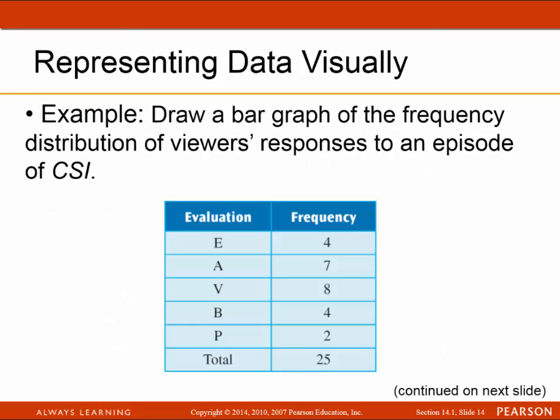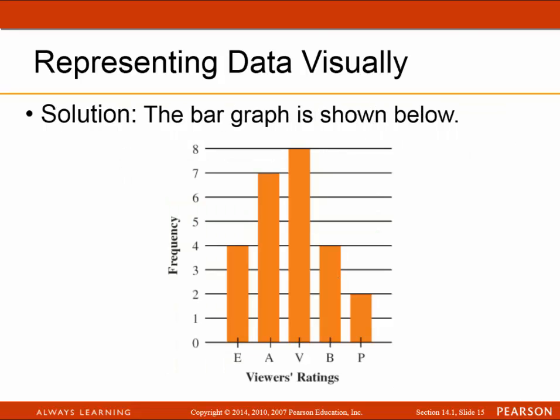Here we have the table from the previous example, and we're going to draw a bar graph. In the bar graph, the frequency on the vertical axis is consistent — it goes from 0 to 8 by 1. The classes are on the horizontal axis, and all the bars are the same width.